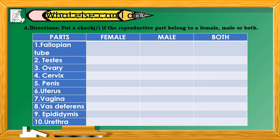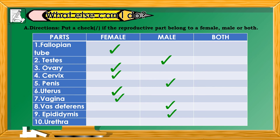Let's answer a short activity from what else can I do. Directions: Put a check if the reproductive part belongs to female, male, or both. Number 1: Fallopian tube — Female. Number 2: Testes — Male. Number 3: Ovary — Female. Number 4: Cervix — Female. Number 5: Penis — Male. Number 6: Uterus — Female. Number 7: Vagina — Female. Number 8: Vas deferens — Male. Number 9: Epididymis — Male. Number 10: Urethra — Both.